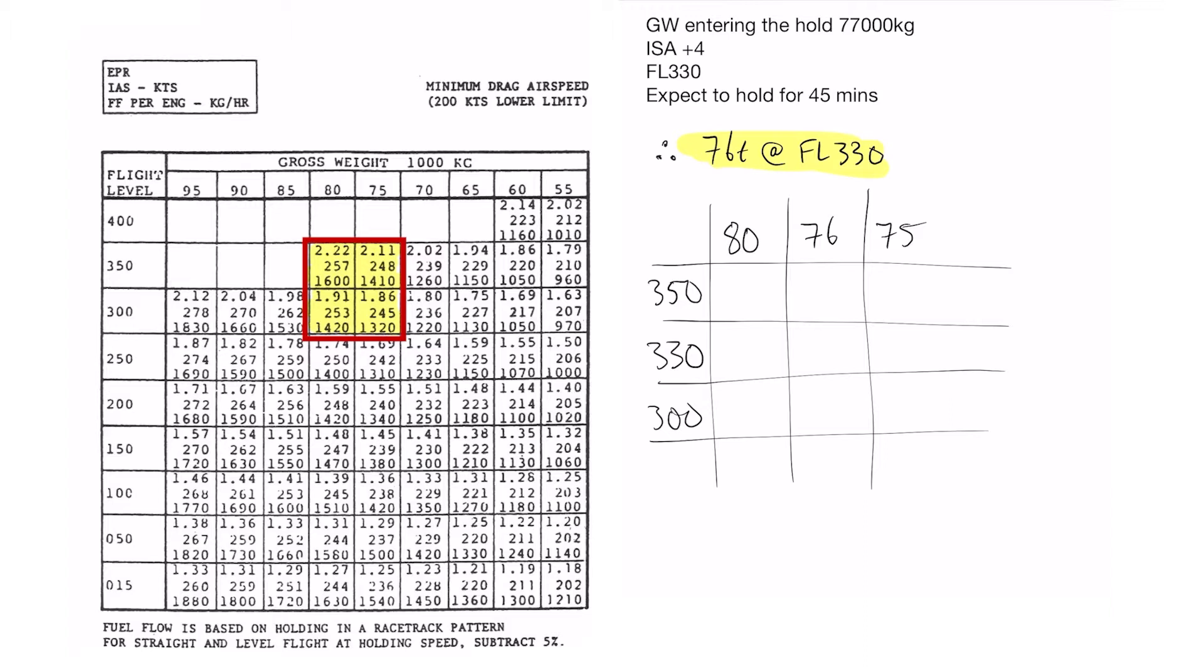Now as we talked about in the first video, the speed is the middle number. So 80 ton, flight level 350, the speed will be 257 knots. For 75 ton, flight level 300, 245. We're going to do the exact same thing as last time. We'll fill in the information we know and calculate the information we don't. So at flight level 350 I can read off the table that it's 257, 253, 248, 245.